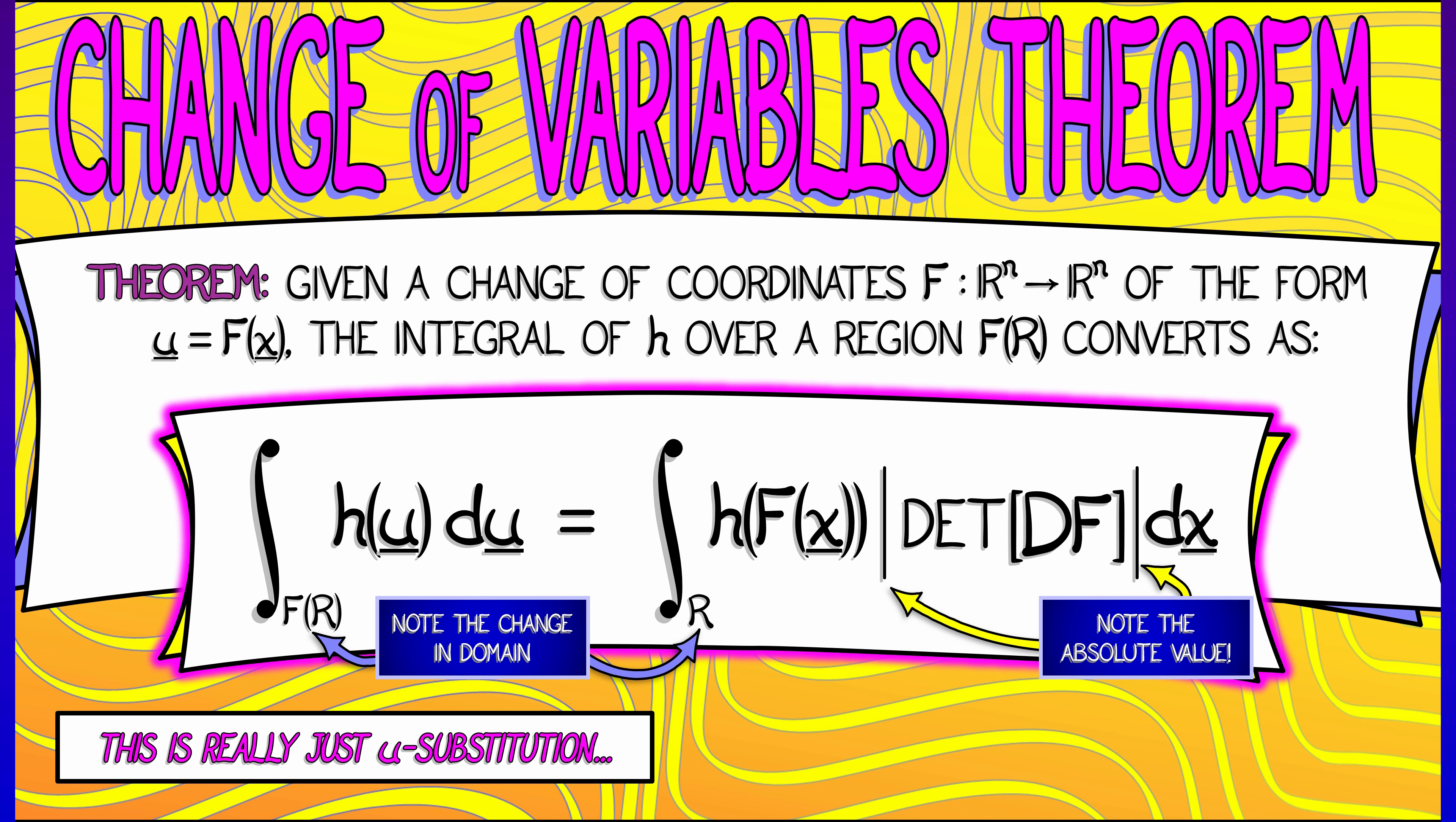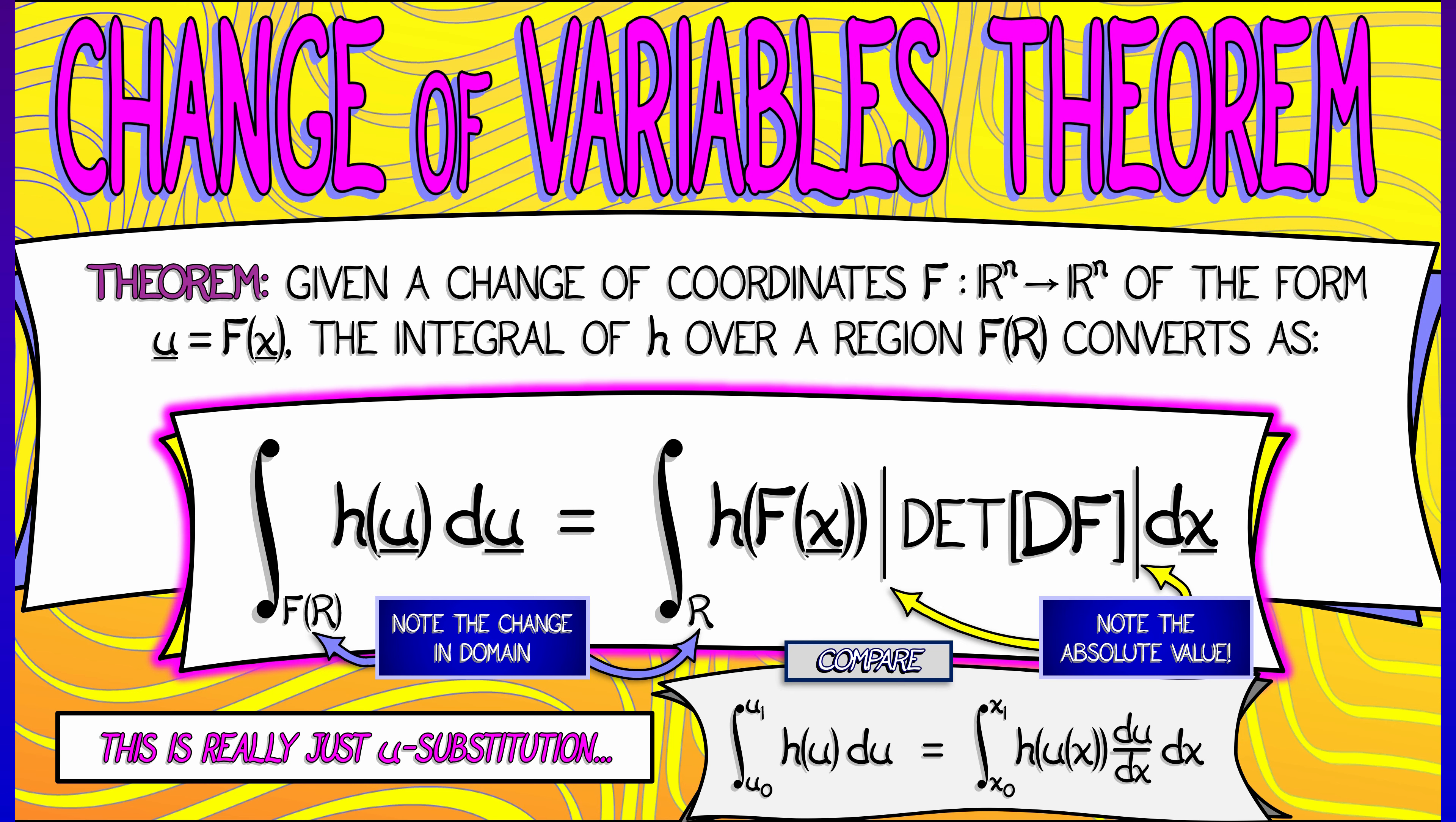Now, this is really just u substitution in disguise. If you write down the classical u substitution formula from single variable calculus, you see that term by term, absolutely everything matches up perfectly, right down to the change of limits, the change of domain.